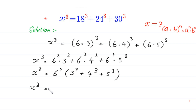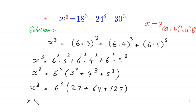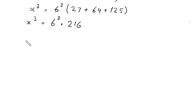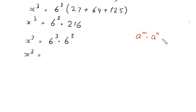Next, x cubed is equal to 6 cubed times — 3 cubed becomes 27, plus 4 cubed becomes 64, plus 5 cubed becomes 125. Next, x cubed equals 6 cubed times 216, since 27 plus 64 plus 125 equals 216. Next, by using the power rule — a to the power m times a to the power n equals a to the power m plus n — 6 cubed times 6 cubed becomes 6 to the power 6.